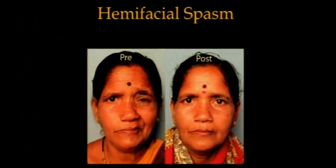Here is a lady who has a hemifacial spasm on the left side. You can see that the brow is being pulled down, and also simultaneously lifted by the frontalis muscle. All three components of the orbicularis are under spasm. Not only that, but her angle of mouth is deviating upwards — this is a classic hemifacial spasm. You can also notice the platysmal band on this side.